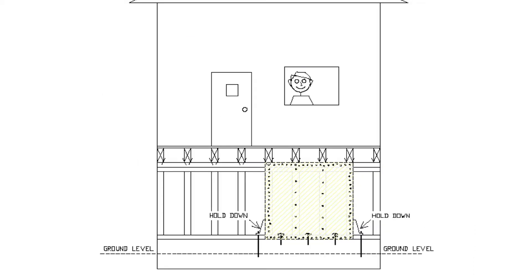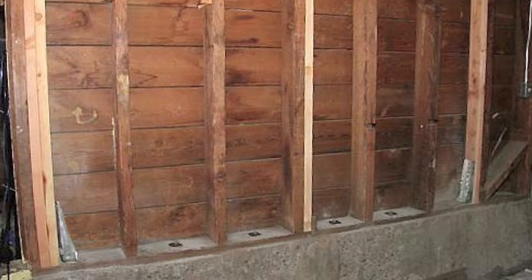Overturning forces are resisted by something put on either end of the shear wall called hold-downs or tie-downs. Here's a shear wall being built before the plywood is installed. You can see the bolts, which should be spaced approximately two feet apart, and on each side, the shiny pieces of hardware are the hold-downs.